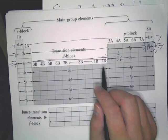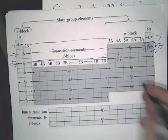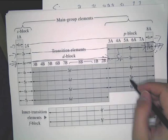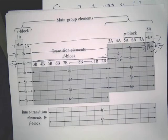When you're starting to do elements way down on the periodic table, noble gas notation is a lot easier and a lot faster.